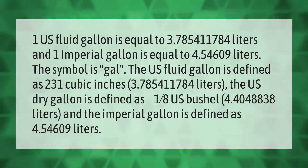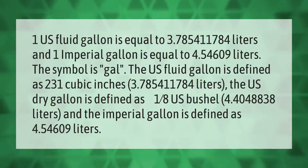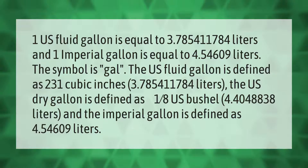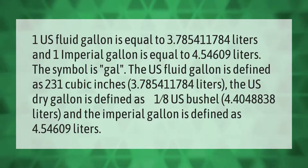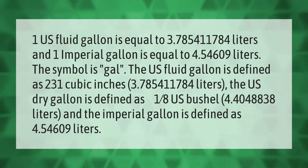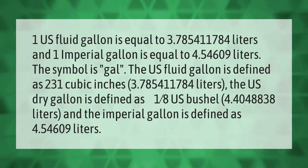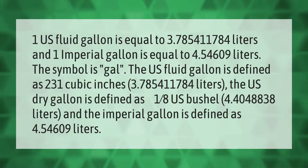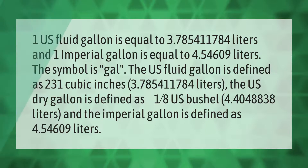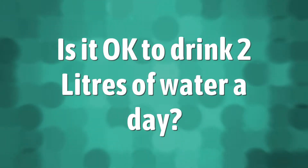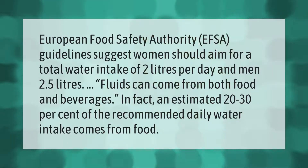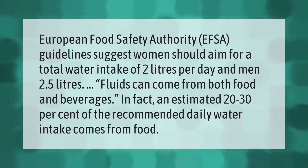The U.S. dry gallon is defined as one-eighth of a U.S. bushel, equal to 4.404838 liters. The imperial gallon is defined as 4.54609 liters.